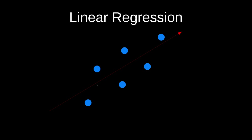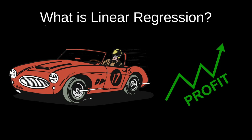So linear regression is where we have some data and we're going to try and predict the line that's the best fit for the data. Where is it used? Well, you try to get the line of best fit. You could use it, for example, to predict the motion of a car or predict the amount of profits that you can make. It's not actually that useful compared to the other ones we're going to learn because most of the data in real life is not linear.